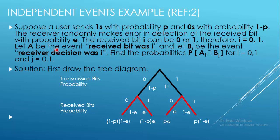Let A_i be the event that the received bit was i — the bit which we received was i. Let B_i be the event that the receiver's decision was i, meaning 0 was sent and the receiver also detected it as 0, or if 1 was sent then the detection is also 1. We want to find the probabilities P(A_i intersection B_j) for i equals 0, 1 and j equals 0, 1. Here the transmitted bit's probability and the received bit's probability are involved.